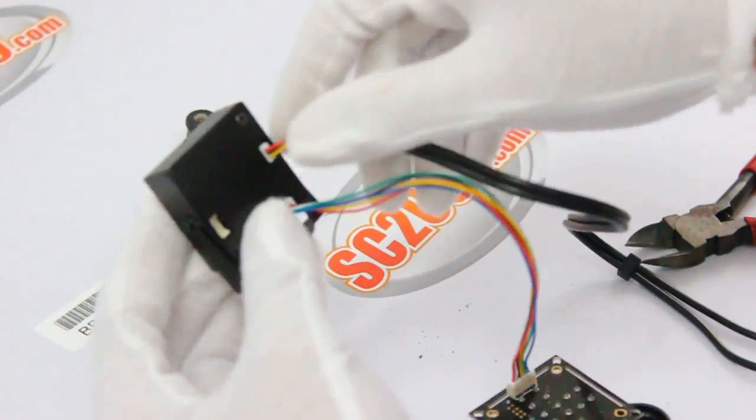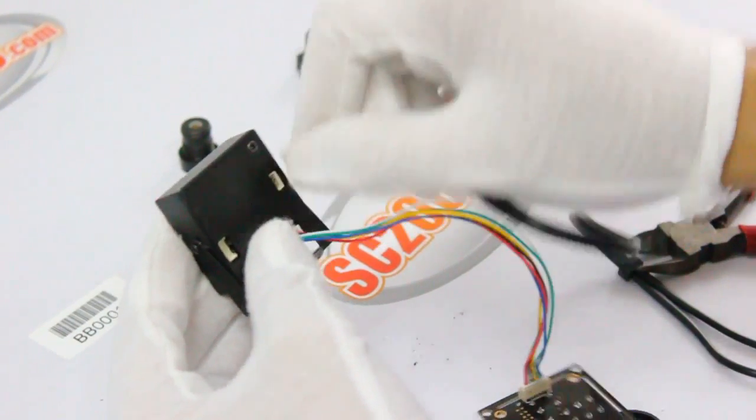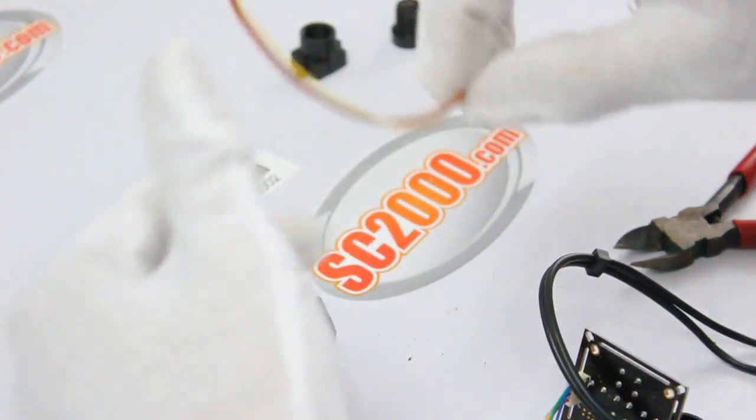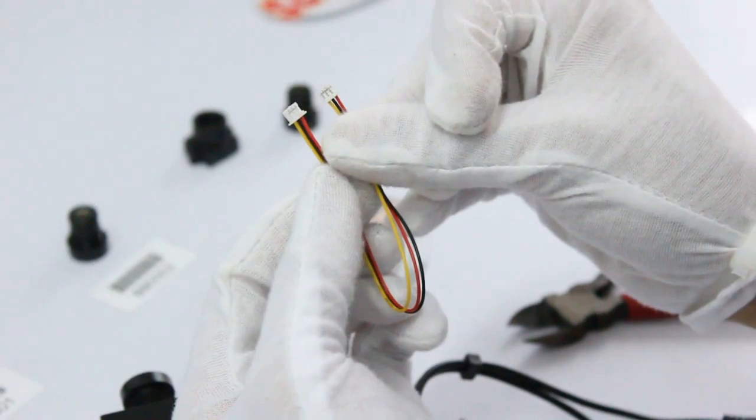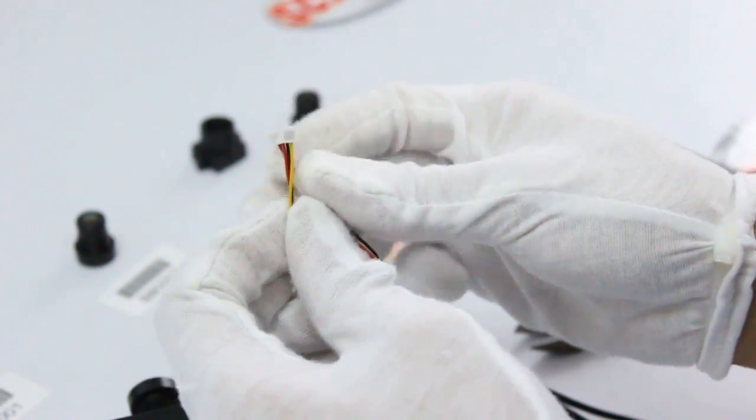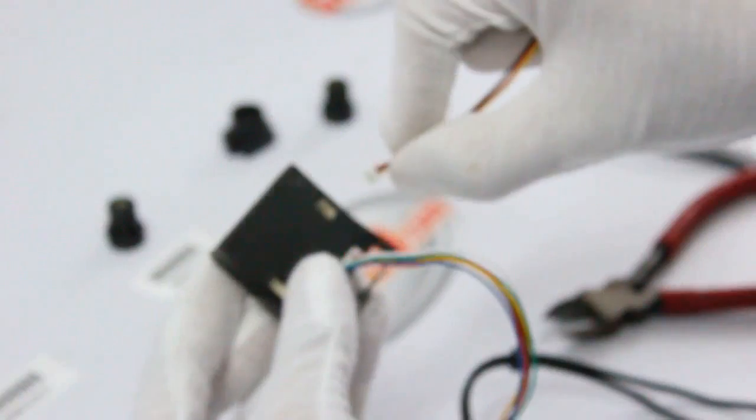If you want the camera to be lighter, we recommend using this small cable CSE009ZY on our website to replace the original power and video cable to make the camera lighter.